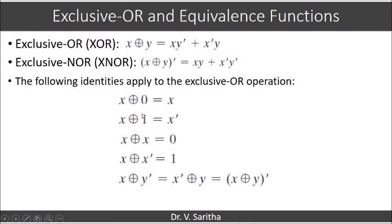The following identities apply to the Exclusive OR operation. For x XOR 0: substituting y = 0 into the expression, y' becomes 1, so we get x·1 + x'·0. Since x'·0 = 0, we are left with x. Therefore, x XOR 0 = x.